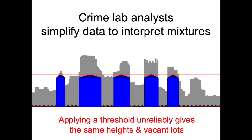The way crime labs have dealt with DNA mixtures is by throwing out the evidence. That's the way it's been for 20 years. People are not good at solving 100-dimensional math problems or probability equations in their head. Instead, they draw a threshold line — pretty arbitrary — and all of this feature-rich information disappears into tall buildings and vacant lots. There's not much left of the data, and if there's enough, they'll try to interpret it, but they lose most of the information.